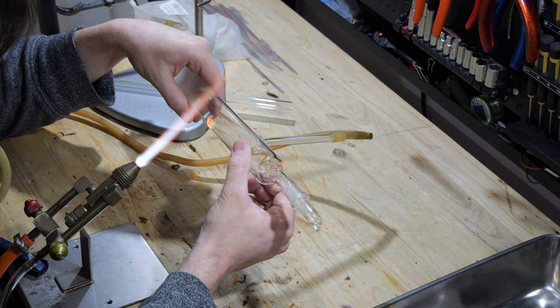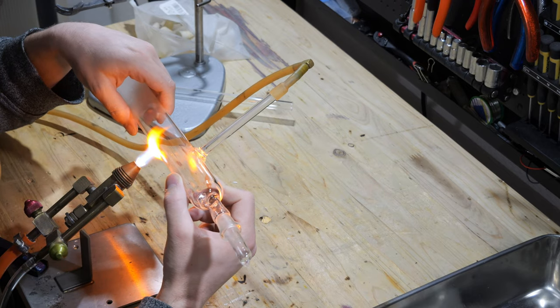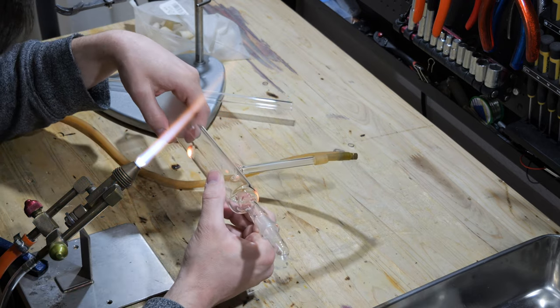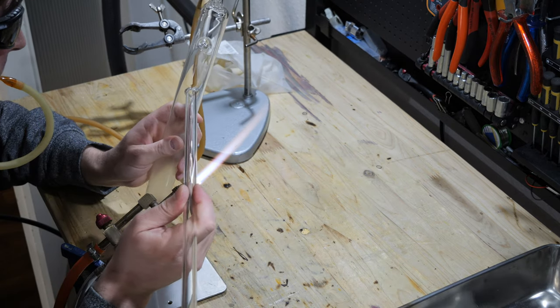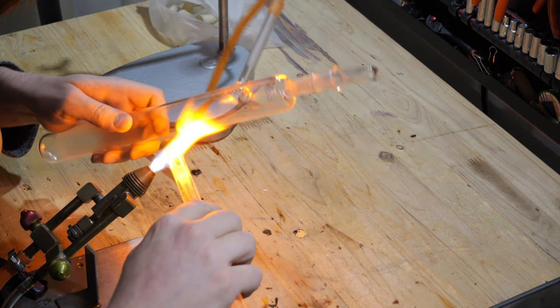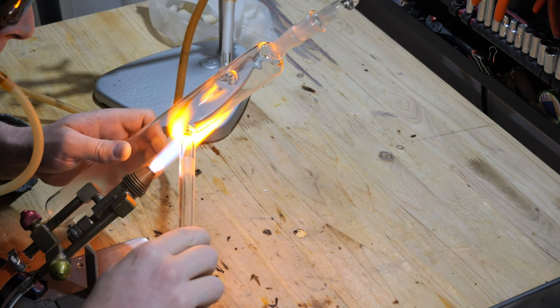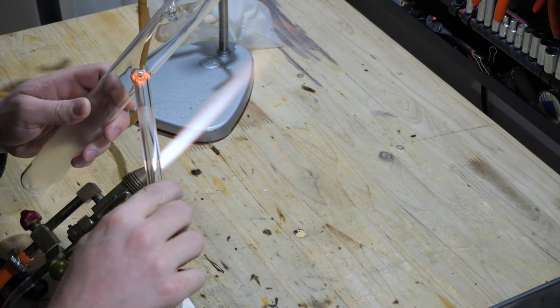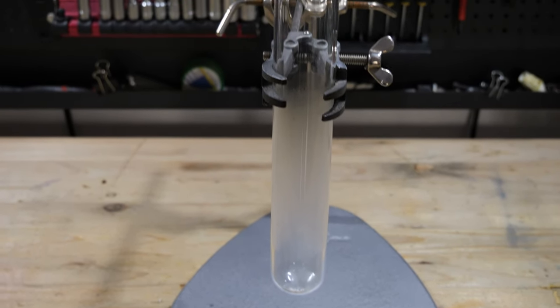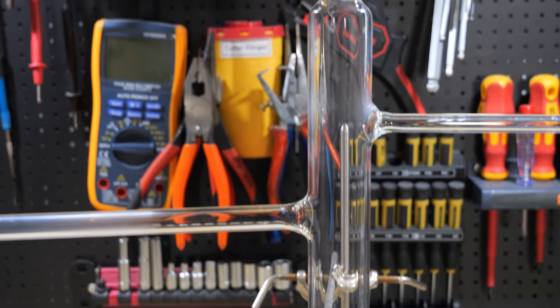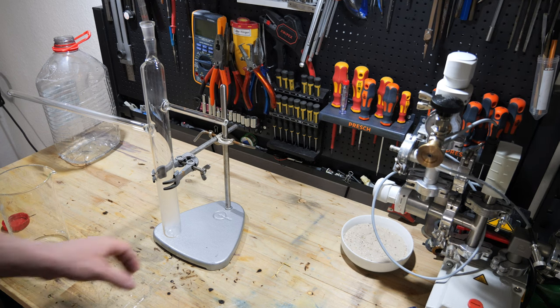The final step was to create another hole below the side neck for the vacuum pump and melt on a thicker, longer glass tube. This is the tube the potassium will flow into and which will be sealed off. Again, I would have liked to use a tube that had a smaller wall thickness, but I didn't have one on hand. But it will do for testing. And with that, the glass apparatus is ready.